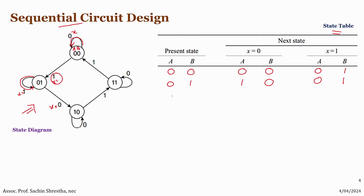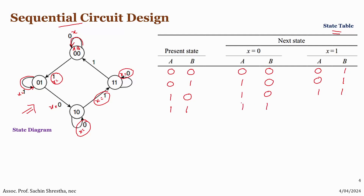Next, for state 10, when input X equals zero, the state remains at 10. When input X equals one, the state changes from 10 to 11. For state 11, when input X equals zero, the state remains at 11.